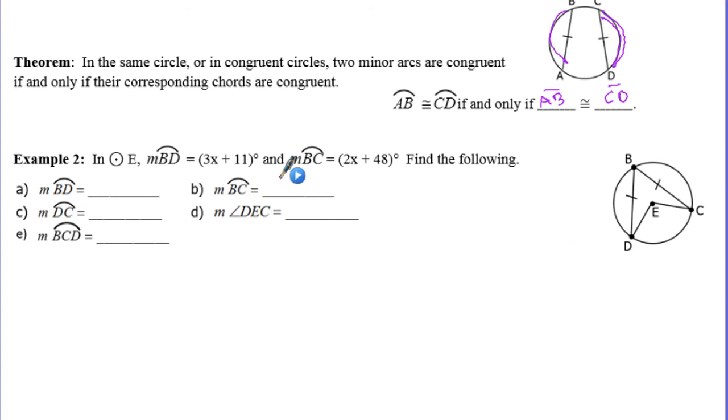We'll take a look at an example of that. We have circle E centered at E. The measure of arc BD is 3x plus 11 and the measure of arc BC is 2x plus 48. Notice since these chords are marked congruent, that means that these arcs BD and BC also have to be congruent. So that means I can set these equal to each other: 3x plus 11 equals 2x plus 48. We end up getting that x is equal to 37.